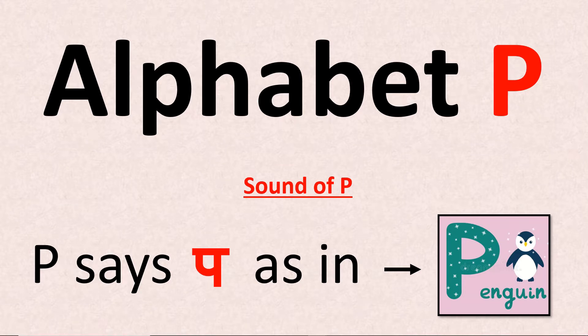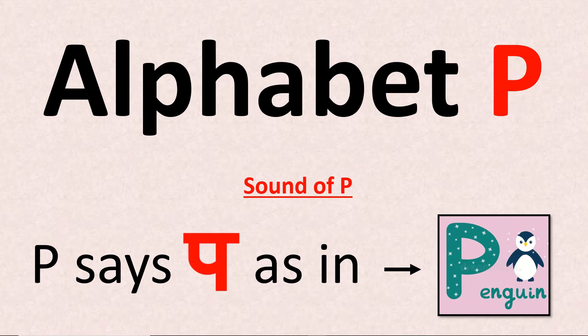Hello students, today we are going to learn capital alphabet P. The sound of P — P says purr, as in penguin. P says purr.